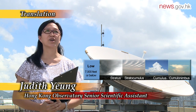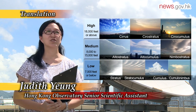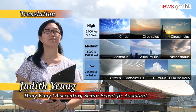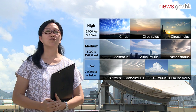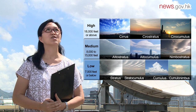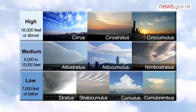Clouds are categorized according to their height into low, middle, and high level clouds. According to their characteristic forms, the three cloud levels can be further classified into ten types. These ten cloud types form in different seasons in Hong Kong.